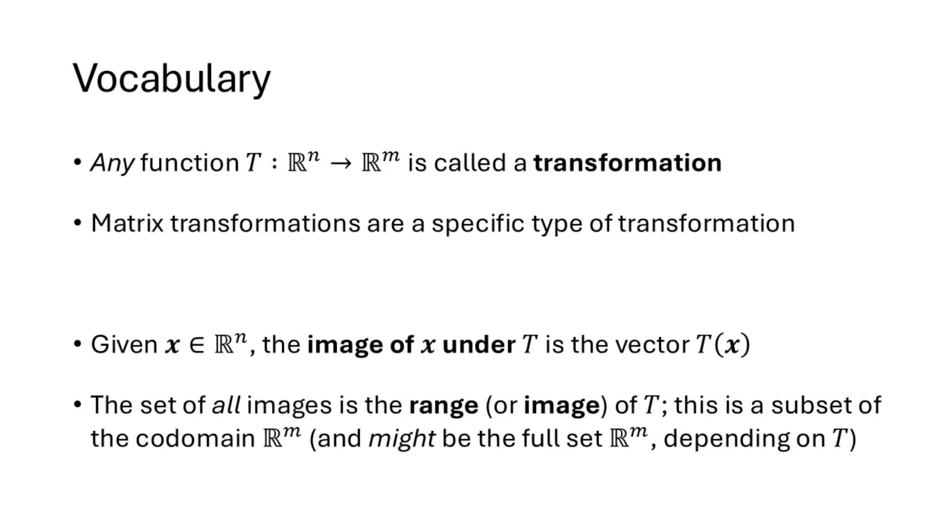Let's talk about some vocabulary. Any function that goes from Rn to Rm is called a transformation. So the transformations that we're talking about in this lecture are a specific kind of transformation, which are transformations defined by a formula t of x equals Ax for some matrix A.